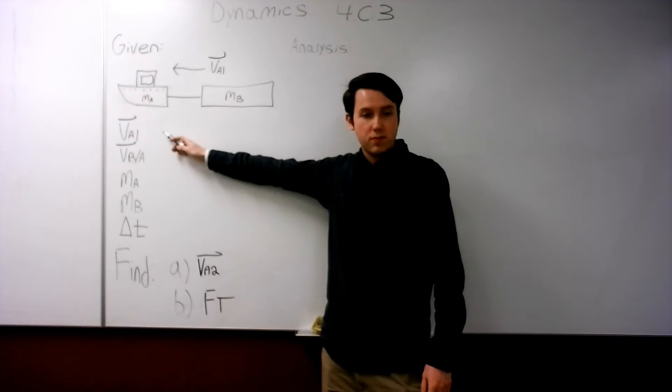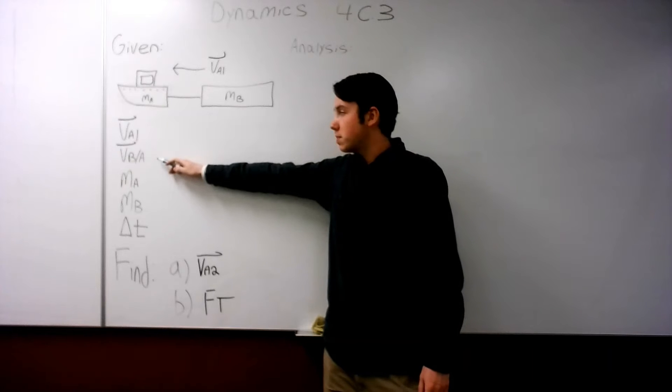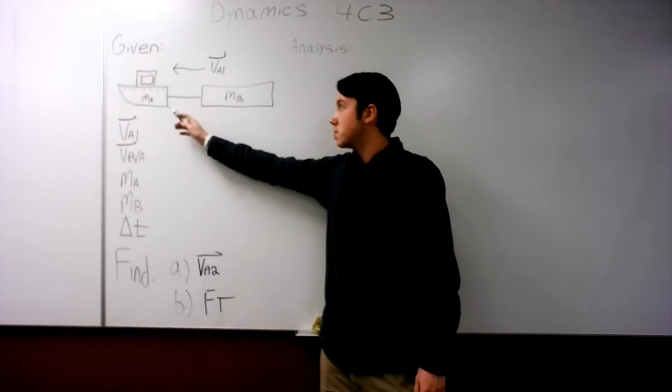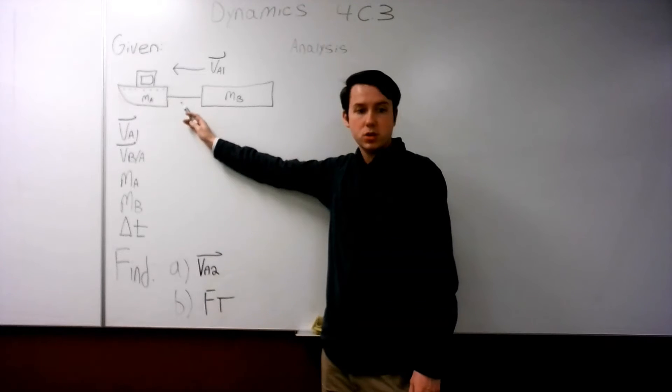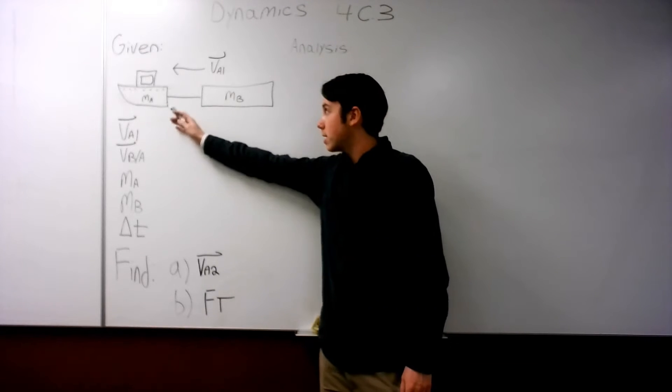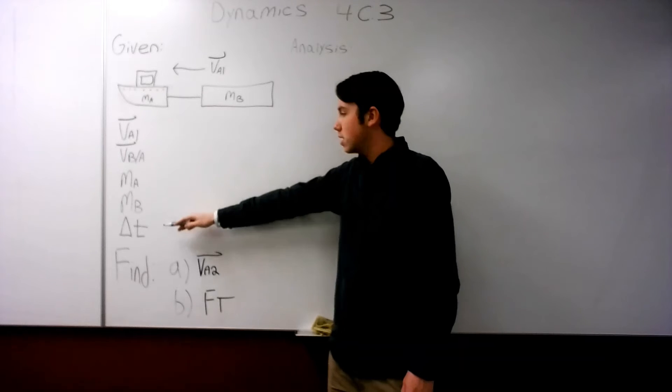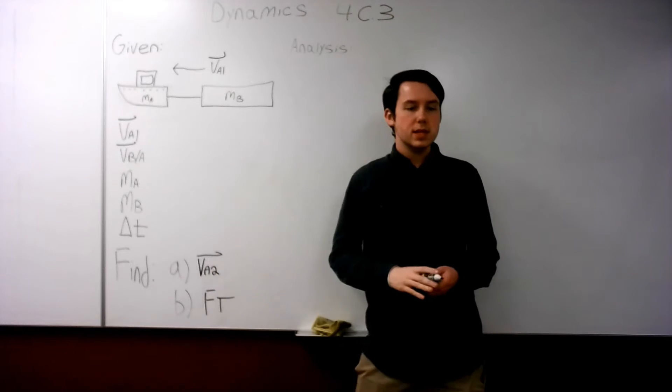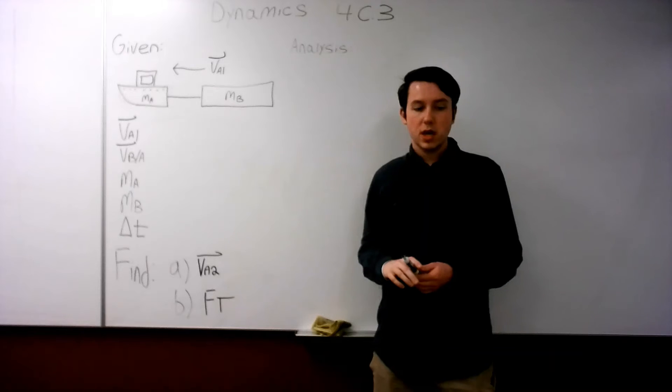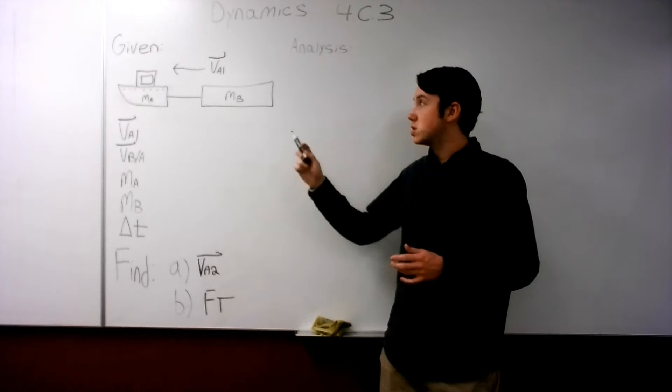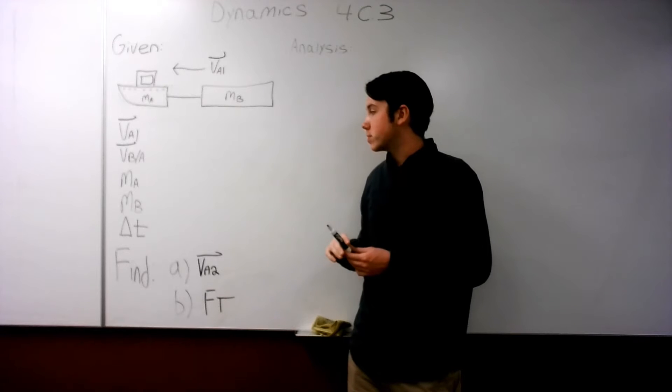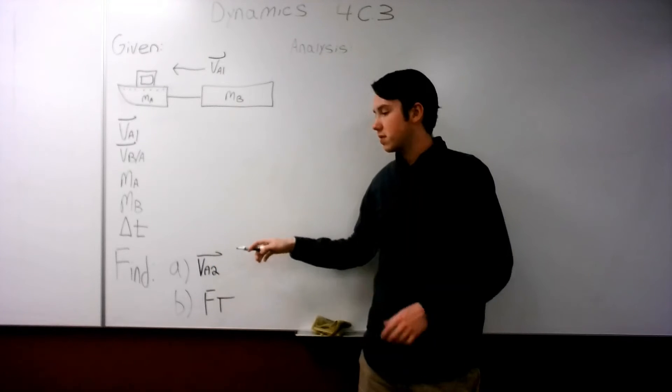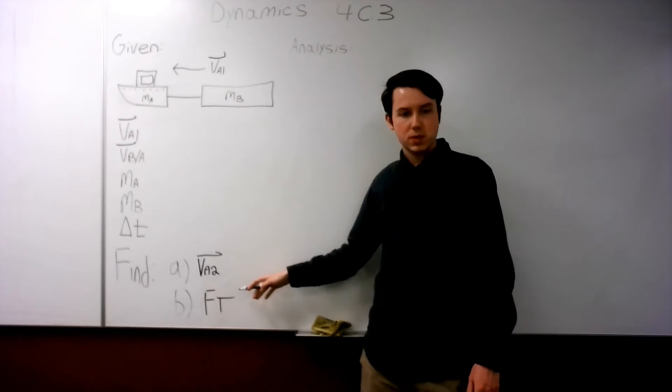we are given a tugboat is pulling a barge at the initial speed VA1. We are given VA1, VB slash A, which is the speed that the tug is pulling the barge in on a winch or cable. We have MA, MB, and delta T. Now, delta T is the time where the tug turns off its engines and it's just pulling the barge in with the winch.